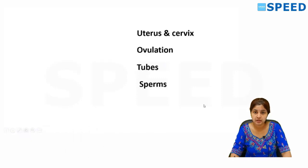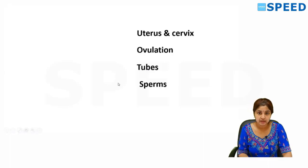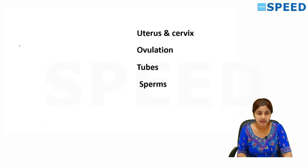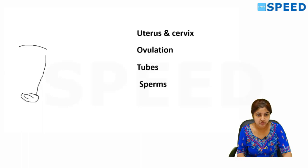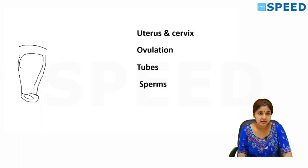For a woman to conceive properly, to become pregnant, there are different parts which need to function properly. First, there needs to be an anatomically proper uterus and cervix to allow the sperms to go inside and also for the embryo or for the conceptus to implant properly. The uterus and cervix should appear normal.